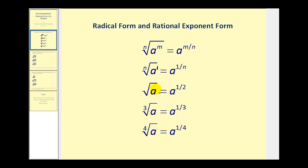If we have the square root of a, the index would be two and the exponent on the a would be one, so that would be equal to a to the one-half power. The cube root of a would be a to the one-third power. The fourth root of a would be a to the one-fourth power, and so on.